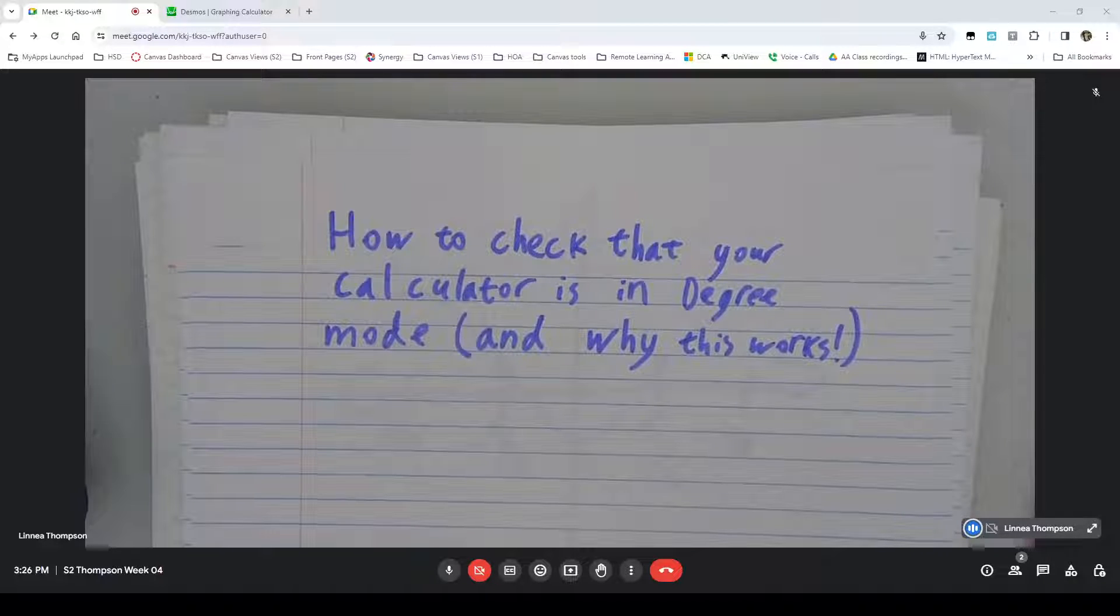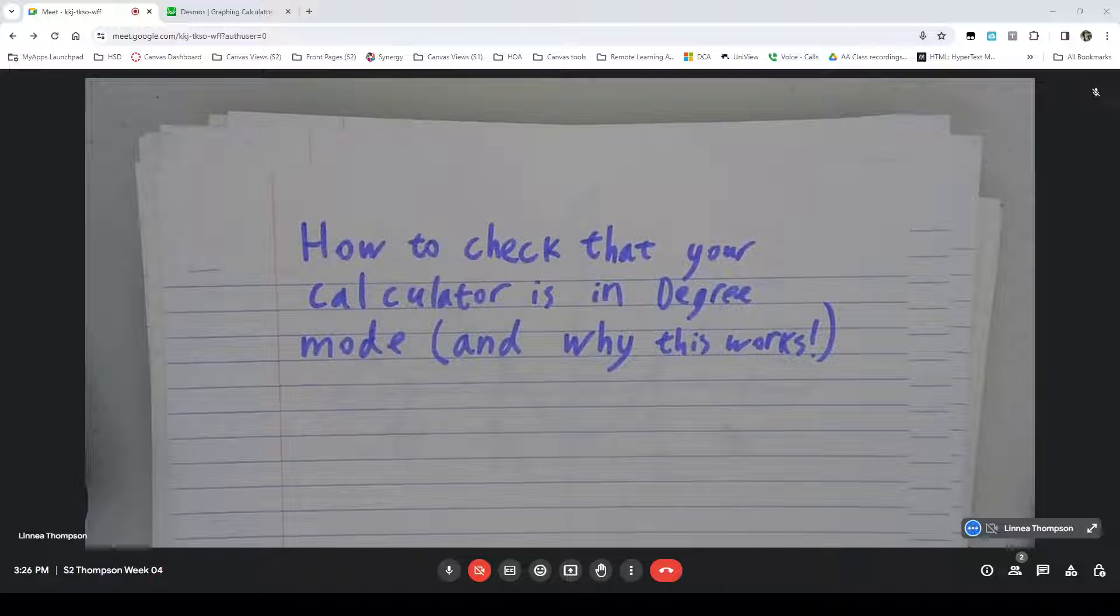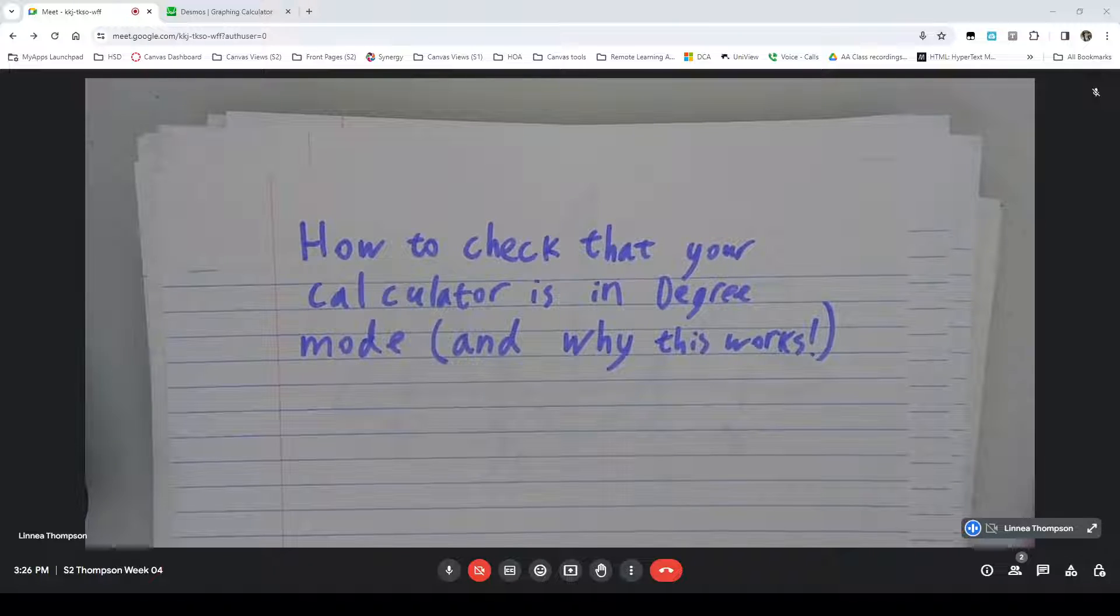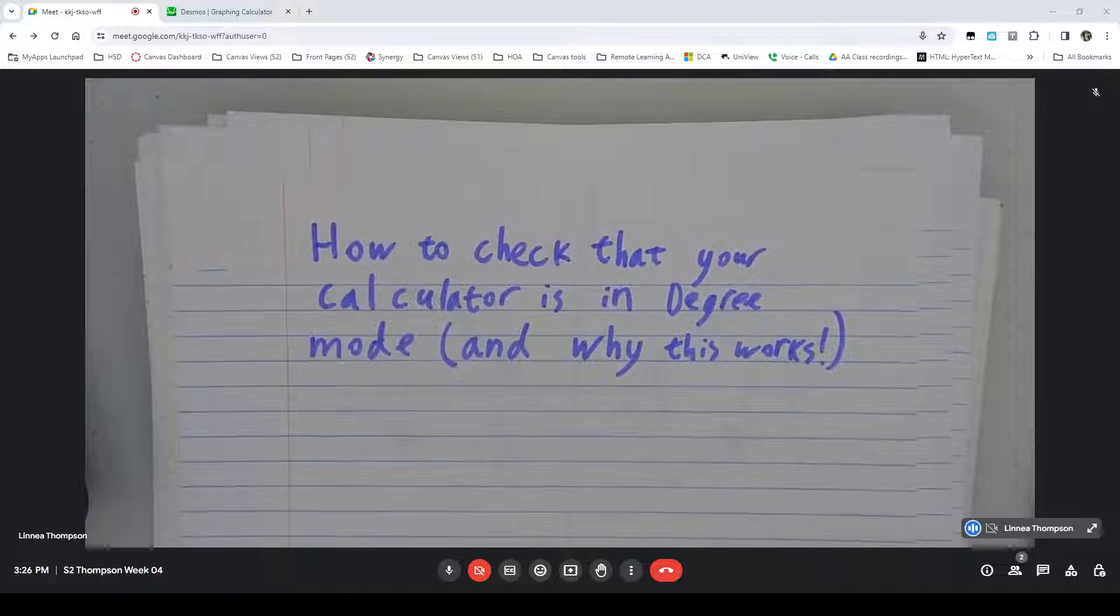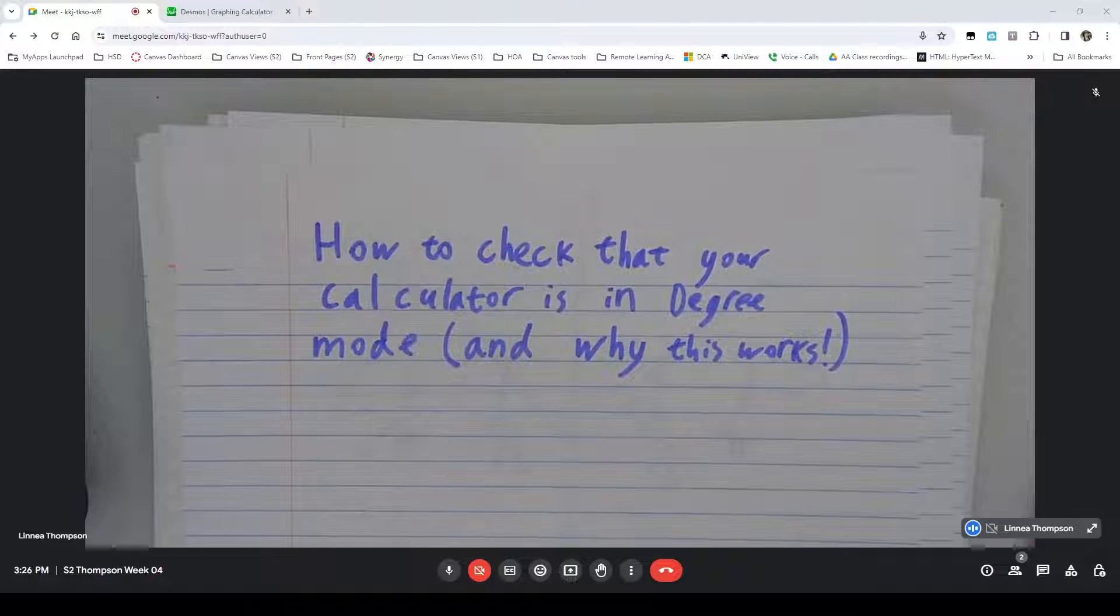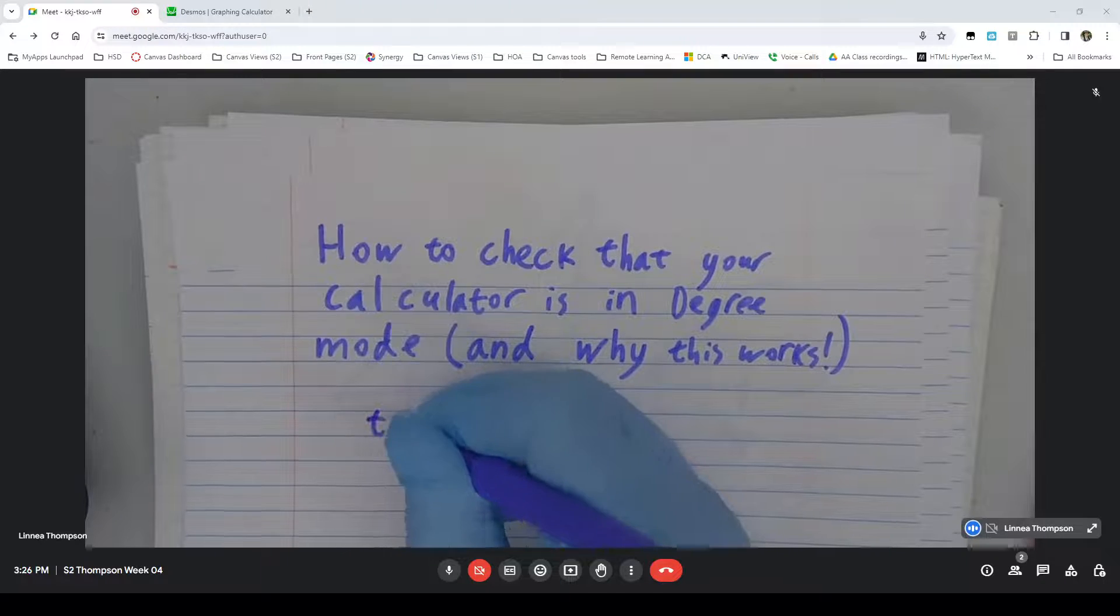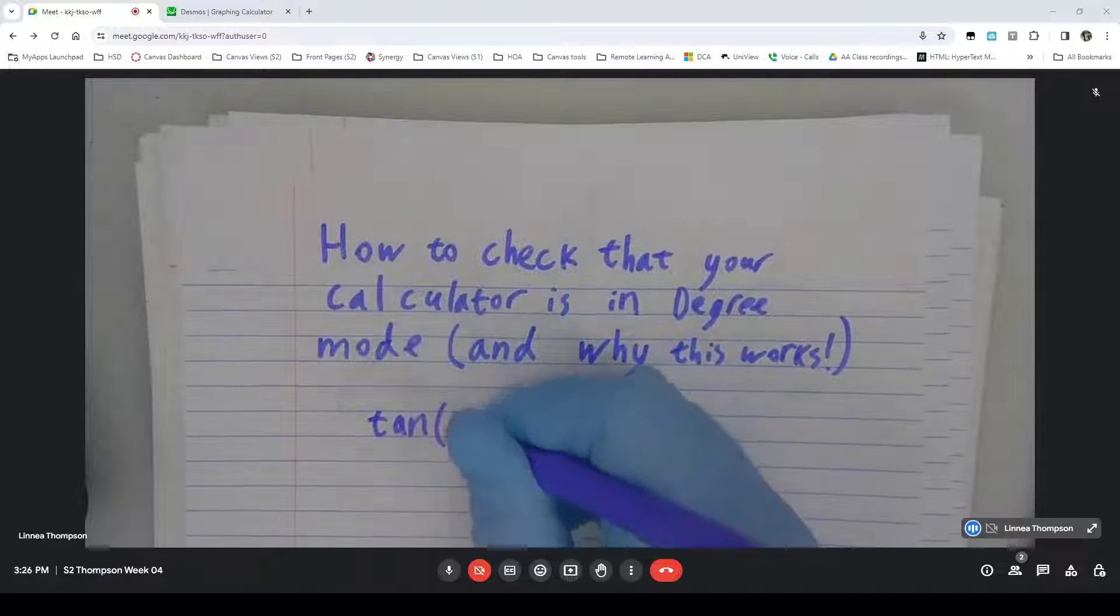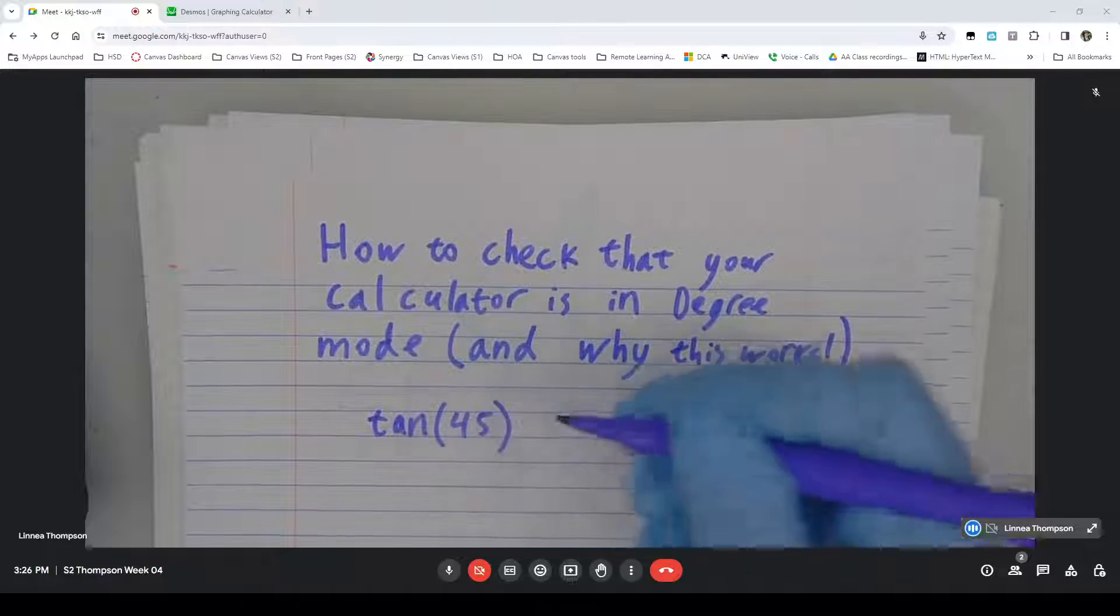How to check that your calculator is in degree mode and why this works. So the fastest way to check whether or not your calculator is in degree mode versus radians mode or maybe even gradians mode is to put in tangent of 45 and see what happens.